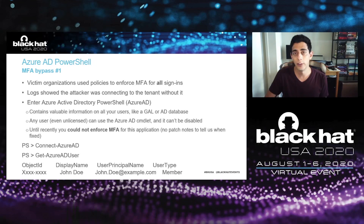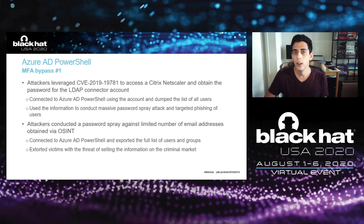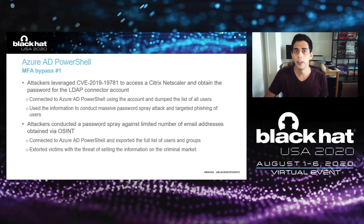The attacker found this out and used it to access a number of organizations we assisted. Microsoft has recently fixed this bug — you can no longer bypass conditional access using this PowerShell module, though we're not exactly sure when they put the fix in because there were no release notes. The first investigation involved a Citrix Netscaler compromise. The attacker had access to this Netscaler using the well-known vulnerability, and that Netscaler device contained the username and password for what the client called an LDAP connector account. This account was an AD account being synced into Azure Active Directory, which meant the attacker could use it to connect to Azure AD using the PowerShell module. They then exported the full list of users — about 50,000 — and conducted a massive password spray attack, inevitably gaining more credentials and further access to the victim organization's environment.